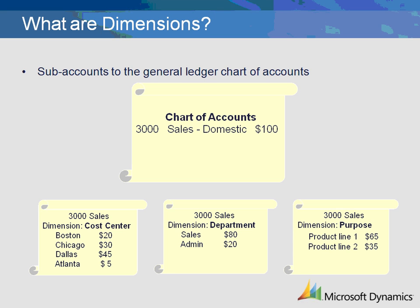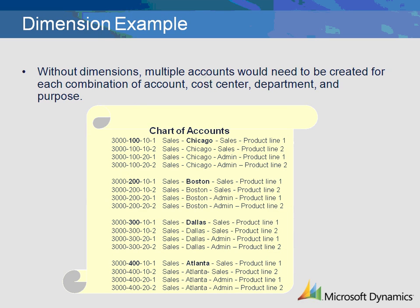In this example, the departments are Sales and Administration, and the purposes are Product Line 1 and Product Line 2. What would happen if we did not have dimensions? Without dimensions, multiple accounts would need to be created for each combination of account, cost center, department, and purpose.